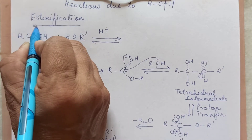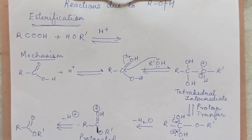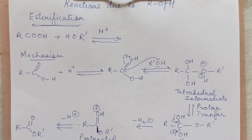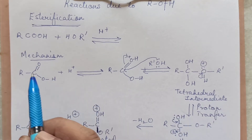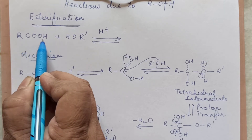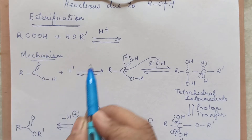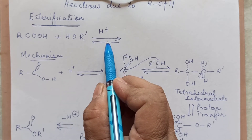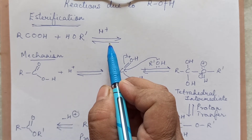First we are talking about esterification. In my previous video I discussed the acidic nature of alcohol and compared alcohol, water, and phenol, and how electron-withdrawing or repelling groups affect phenol's acidic nature. Esterification is the process of preparing an ester using carboxylic acid and alcohol in acid medium — we use concentrated sulfuric acid to carry out the reaction.